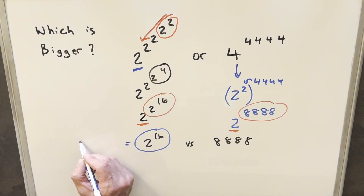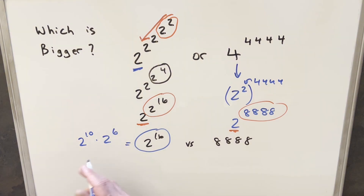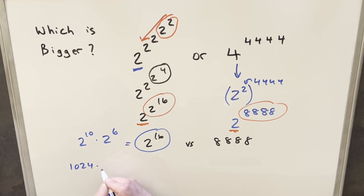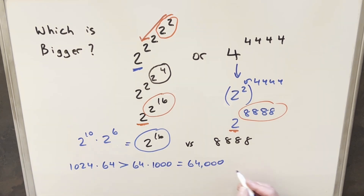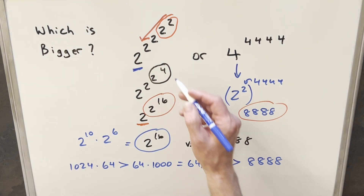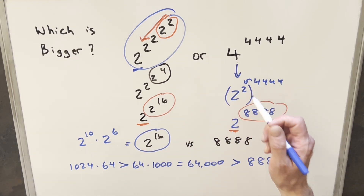For 2 to the 16th, I can break this up as 2 to the 10th times 2 to the 6th. For 2 to the 10th, that's 1024. And for 2 to the 6th, that's 64. So 2 to the 16th is greater than 64 times 1000, since 1024 is greater than 1000. That equals 64,000. And 64,000 is clearly greater than 8888. So we conclude that 2 to the 2 to the 2 to the 2 to the 2 is greater than 4 to the 4 to the 4 to the 4.